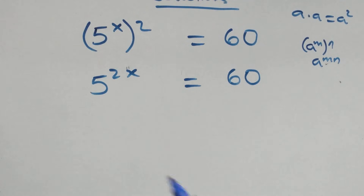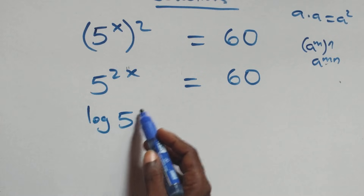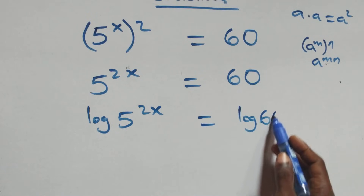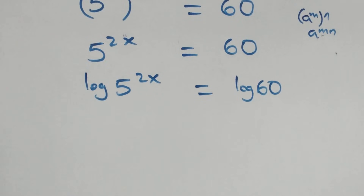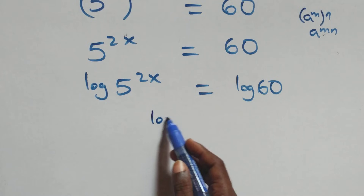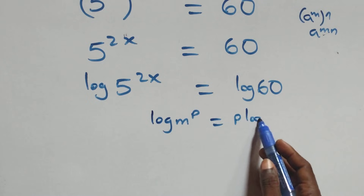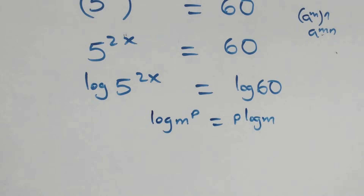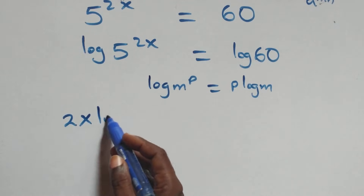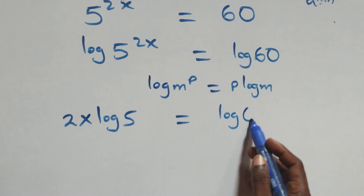The next step: we take the log on both sides. Here we have log of 5 raised to power 2x equals to log 60 from here. At this next step, we apply the power rule of log: when we have log m raised to power p, this is the same thing as p·log m. At this here, we have 2x·log 5 equals to log 60 on this side.